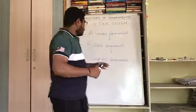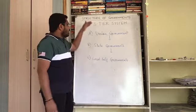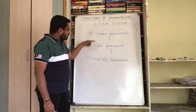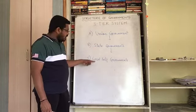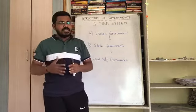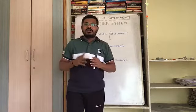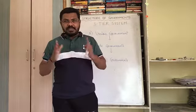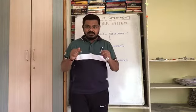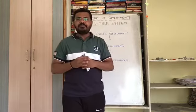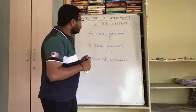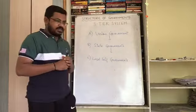In the union government, if you see here you can see the three-tier system: union government, state governments, and local self-governments. Today our objective is to look at local self-government as the main topic, but we will quickly revise what is there in the union and state governments as well.